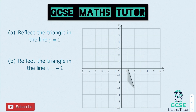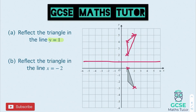For this one, the line y equals 1 for the first question — so reflecting in the line y equals 1. That's going to be a horizontal line where y equals 1 on the y-axis. Reflecting point at a time: that's 1 away, the next one's 3 away, and this one down here is 1, 2, 3, 4 away — so 1, 2, 3, 4 — gets us just there. Joining that up nice and neat with a pencil and ruler.